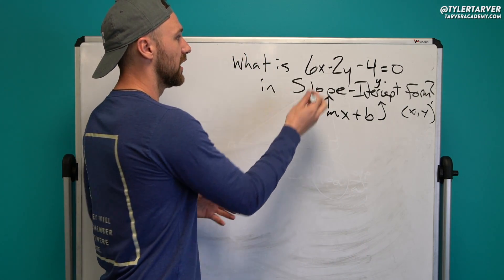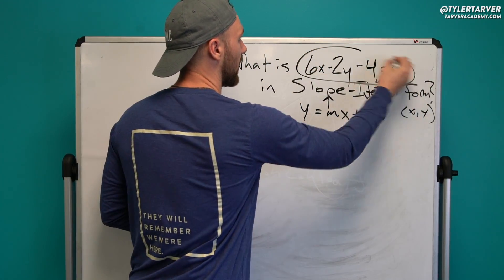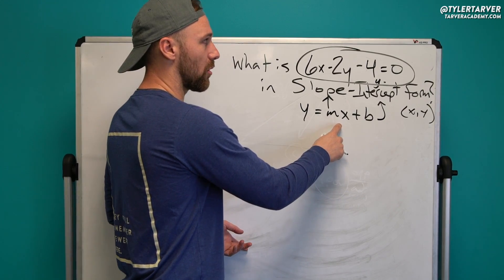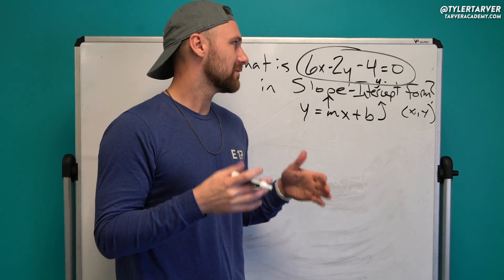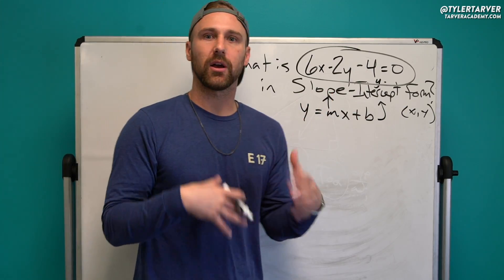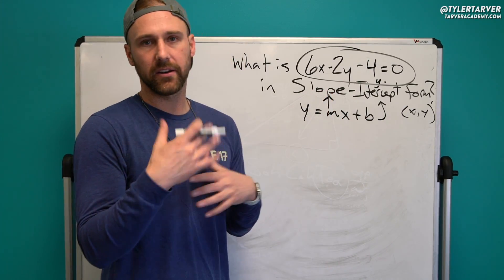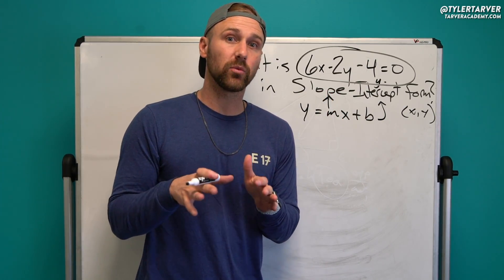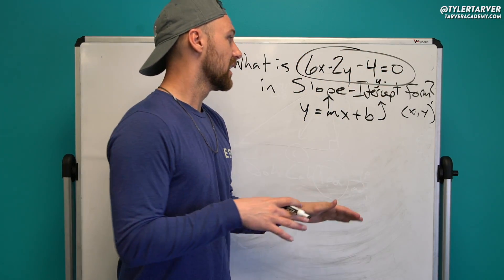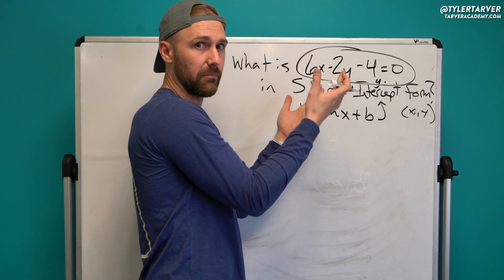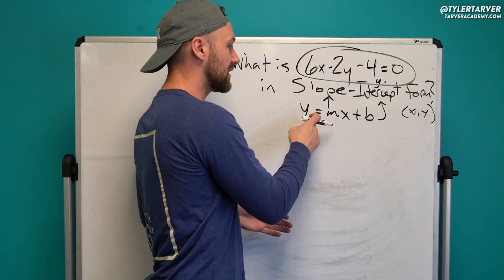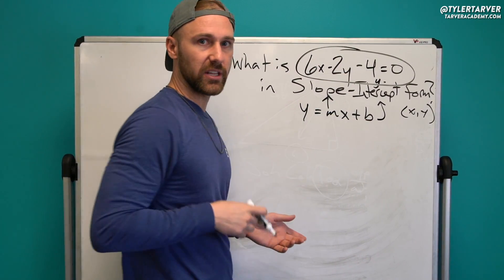So our goal here is to take this equation and put it in this form. Now the easiest way to do it—there are ways you can work the equation, you can find coordinates and all that—but the easiest way, if they've already given you all of it, is to just rearrange the equation using math to get y by itself, and then make sure you arrange it like this.